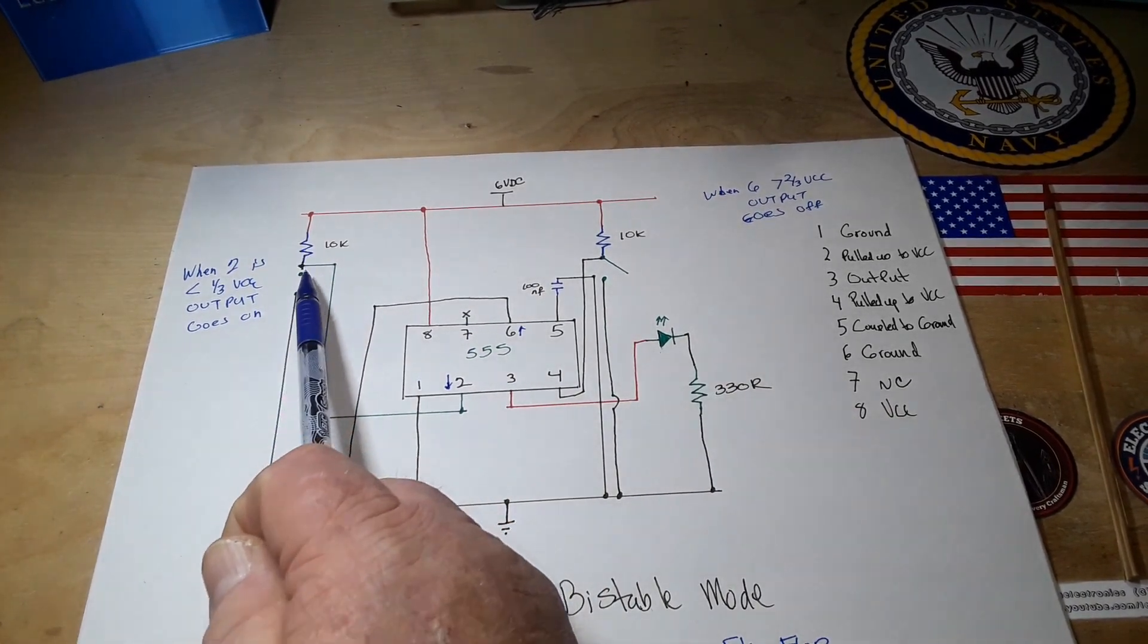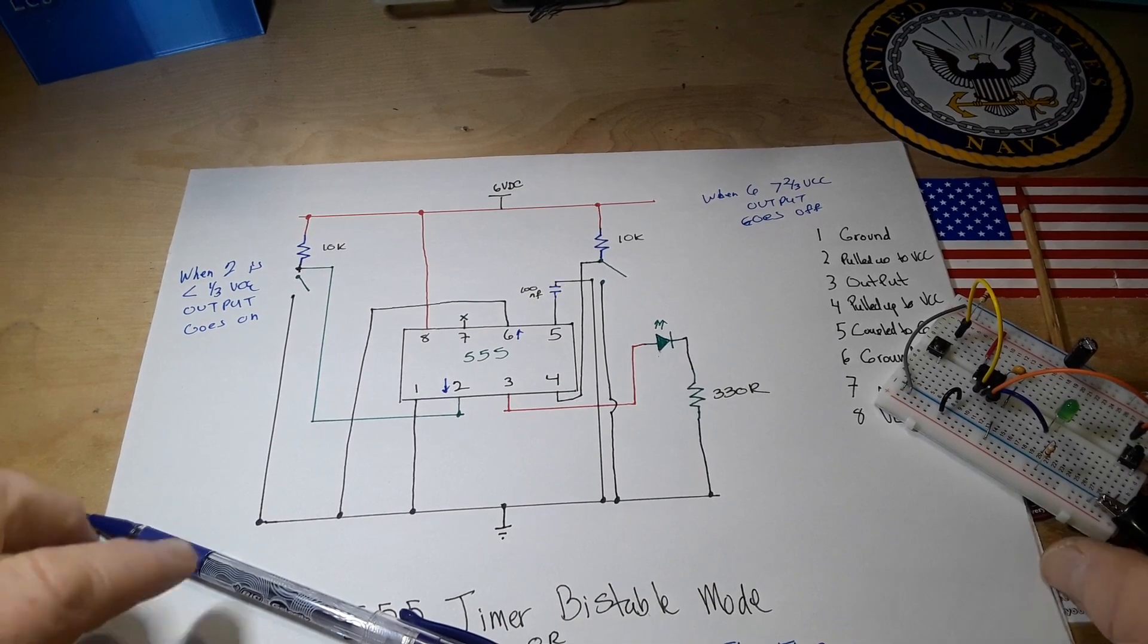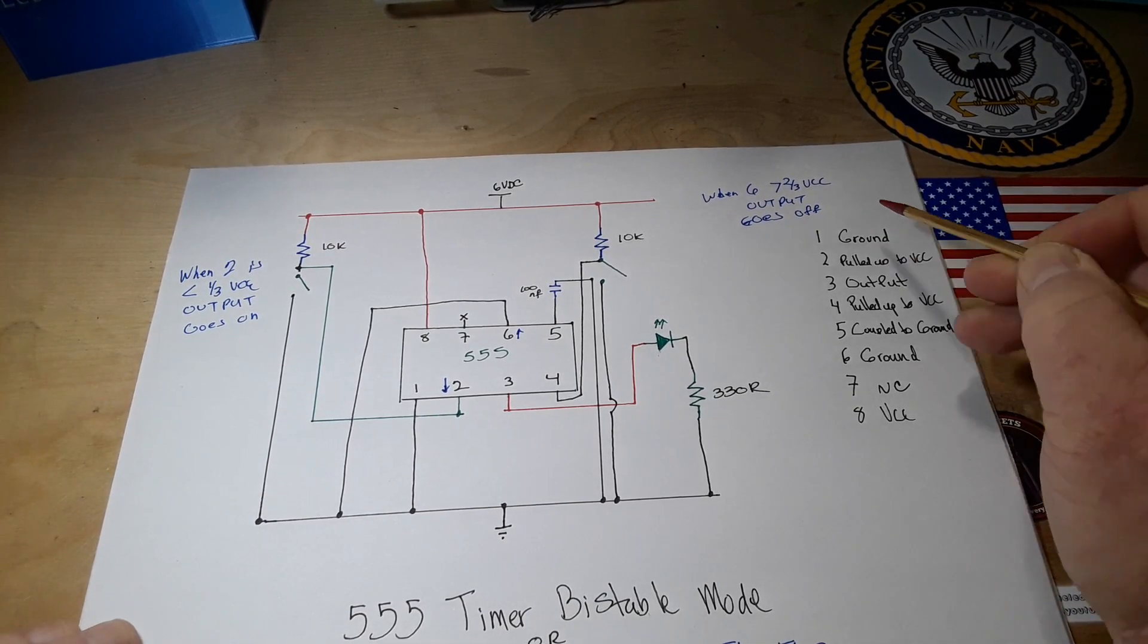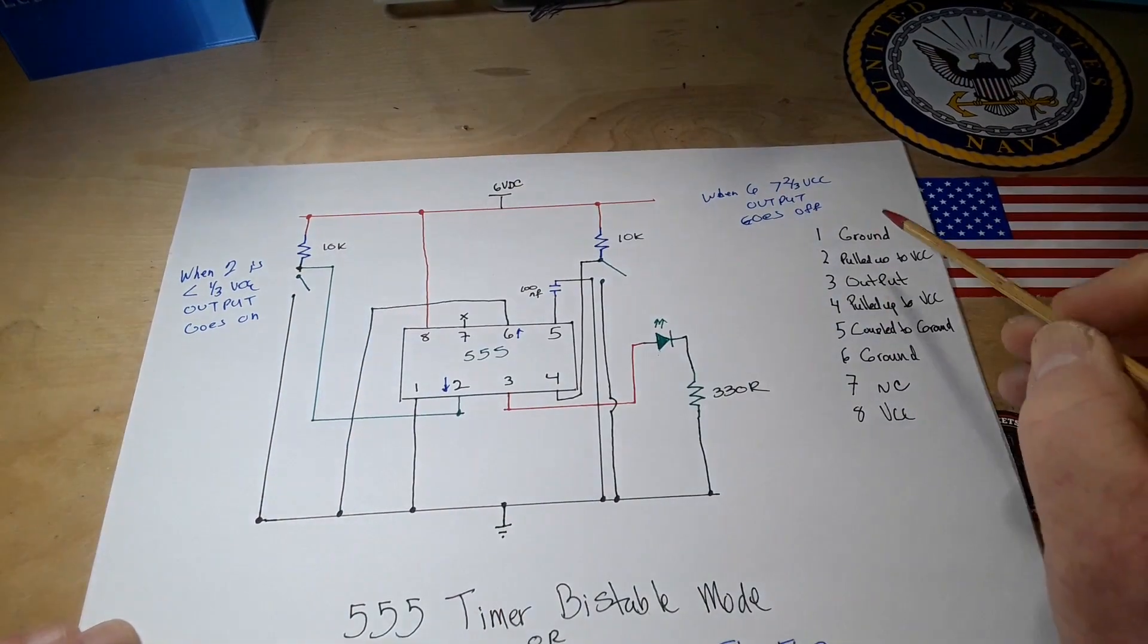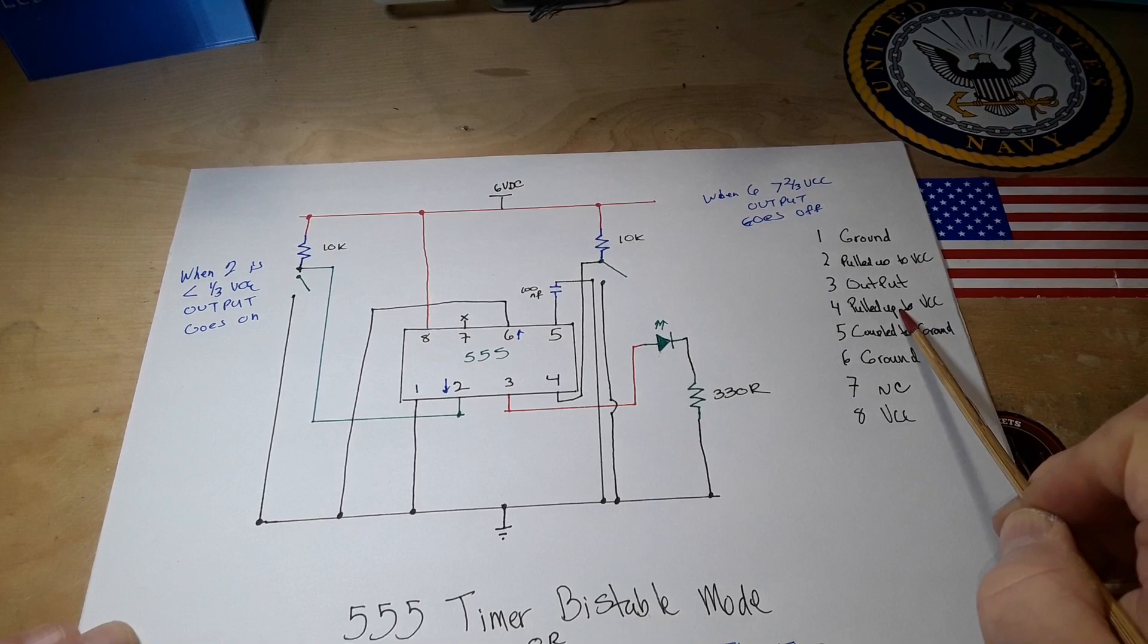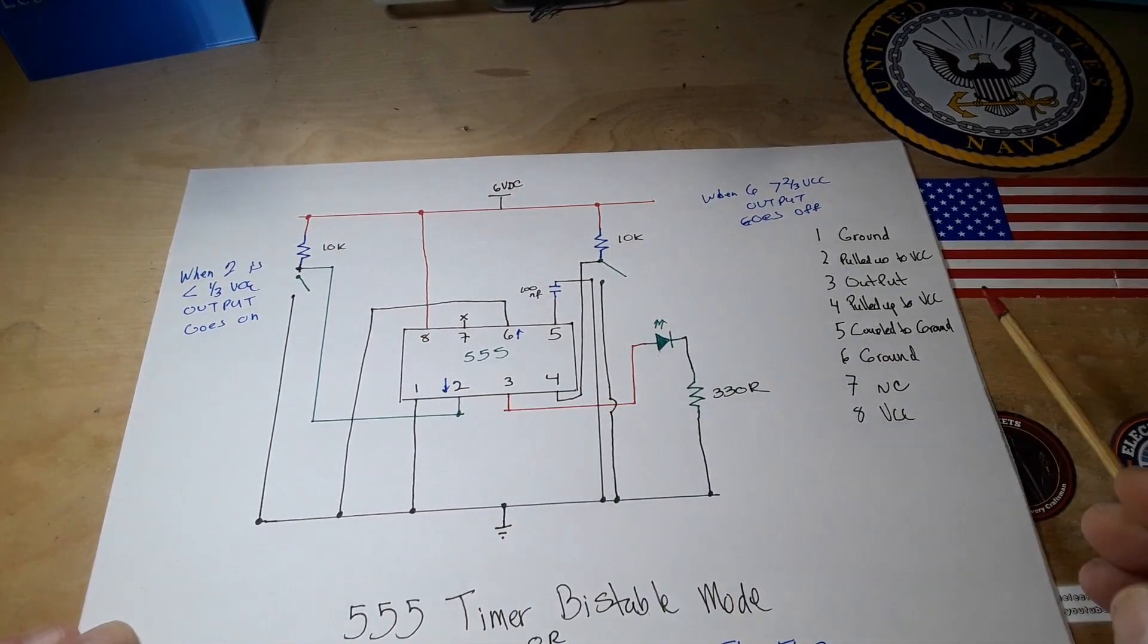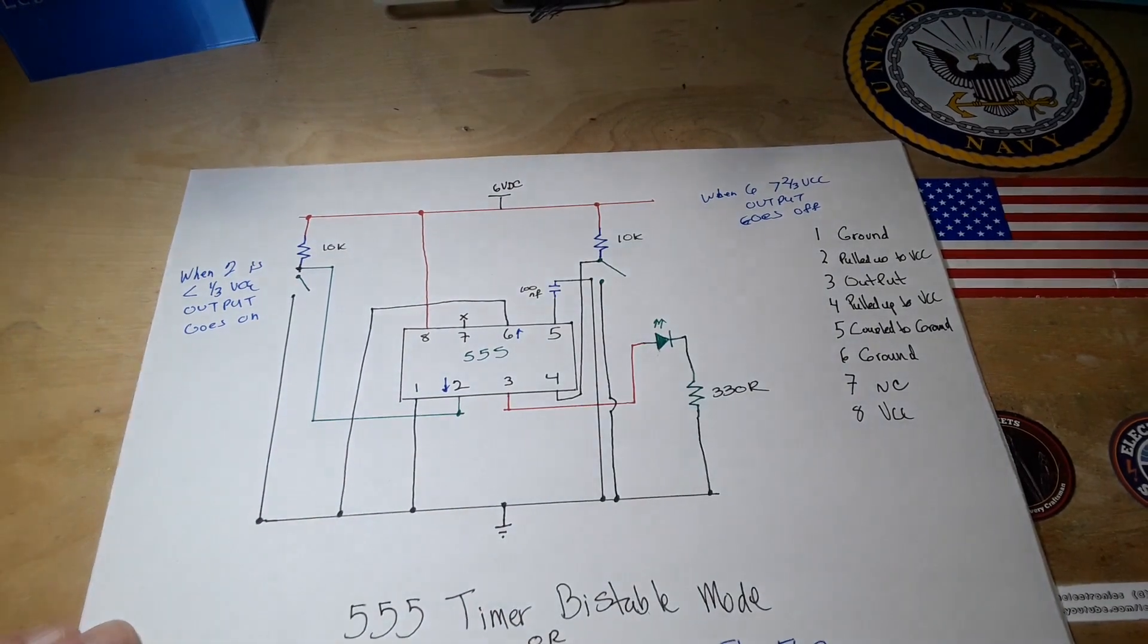When we trigger that output by closing the switch here, so I made a little pin assignment cheat sheet over here that we can take a look at. Pin 1 going to ground, pin 2 our trigger is pulled up to VCC with that 10k resistor, pin 3 is our output going through the diode and a current limiting resistor to ground. Pin 4 is our reset again pulled up to VCC, pin 5 coupled to ground, pin 6 connected to ground, pin 7 that's our discharge pin it's not used in this case, and pin 8 is VCC.